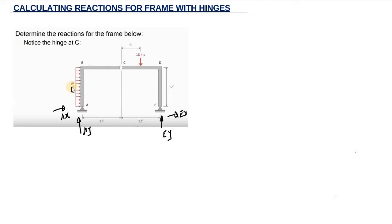What we need to do is replace the distributed load with an equivalent force. We are going to calculate the area of this rectangle. The length is going to be 12 feet while the width is going to be 6 kip per foot. So 12 multiplied by 6 gives us 72. So we are going to have 72 kip, and this is acting at the middle of the rectangle.